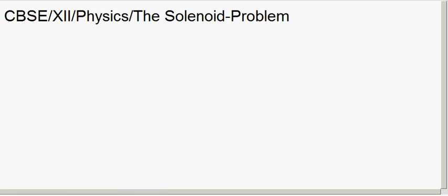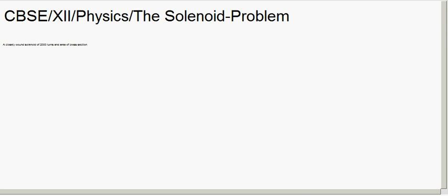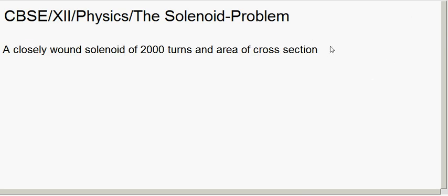Good morning. In today's session we will do one problem based on solenoid. First we will write down the question. A closely wound solenoid of 2000 turns and area of cross-section 1.6 into 10 to the power minus 4 meter square.